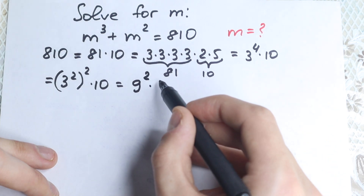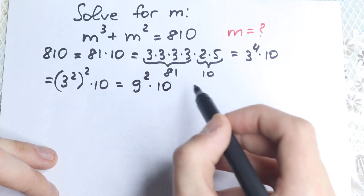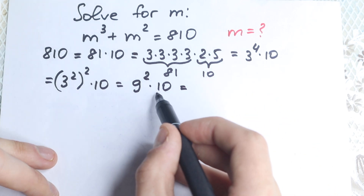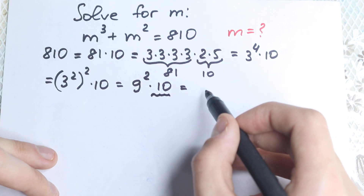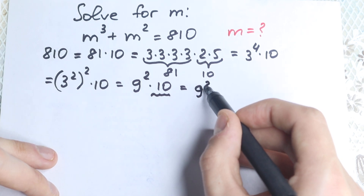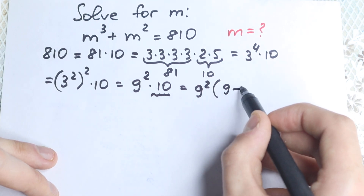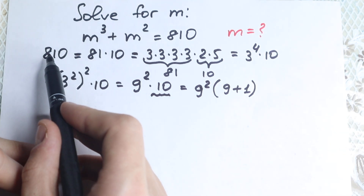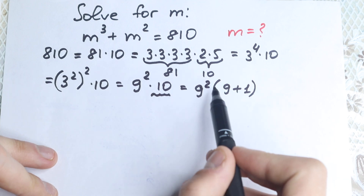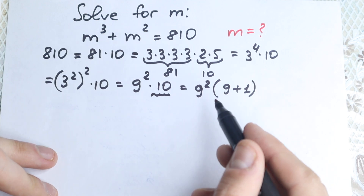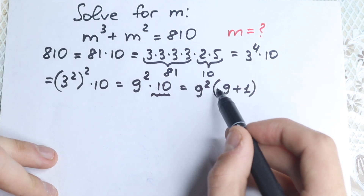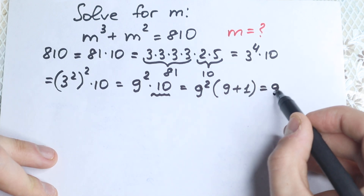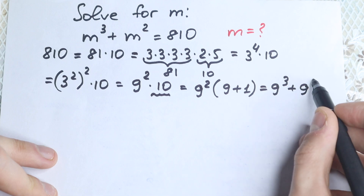We can write this 10 as 9 plus 1, so we have 9 squared times (9 plus 1). This is our first step — I just want to express 810 in this way. Because 9 squared times (9 plus 1) equals 9 cubed plus 9 squared when you multiply it out.